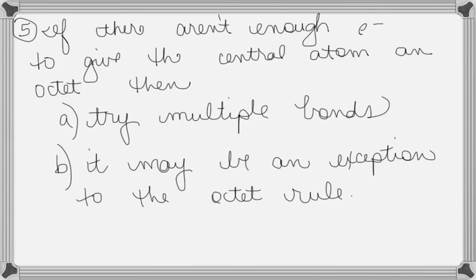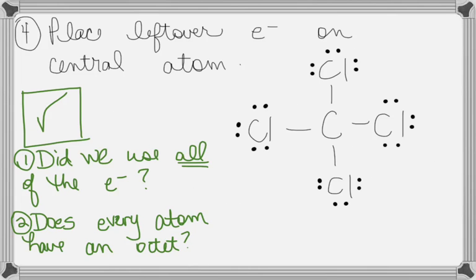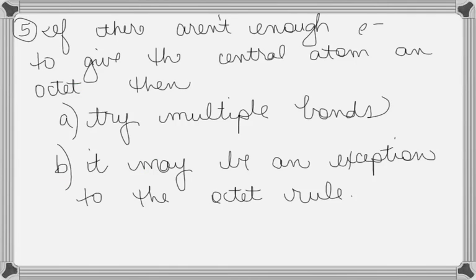For the one we just did, when we got to step four, and I wrote in green up here, I wrote those two little checks. The answer to both of those questions was yes. Since the answer to both of those was yes, that means this right here, the C and the CLs with all the dots, that is our Lewis structure. For this one, we don't need number five because it checked out. Does that make sense? Questions? Yet? No?